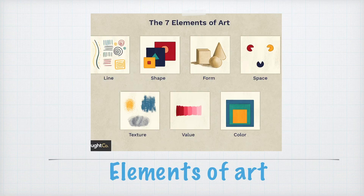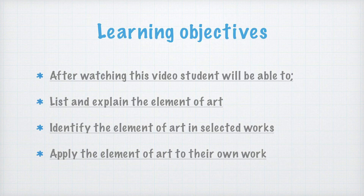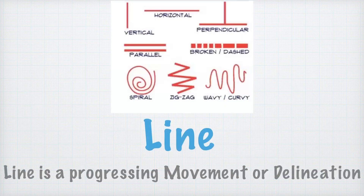Today's topic is elements of art. The elements of art are the building blocks of all the arts — every piece of art ever created includes one or more of these elements. Let's learn about line, color, shape, form, value, space, and texture. After watching this video, you will be able to list and explain the elements of art, identify the elements of art in selected works, and apply the elements of art to your own works.